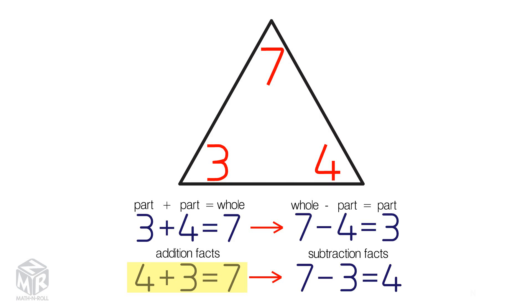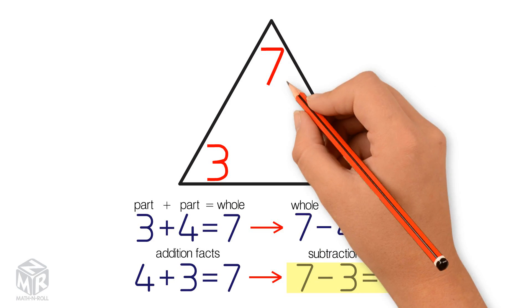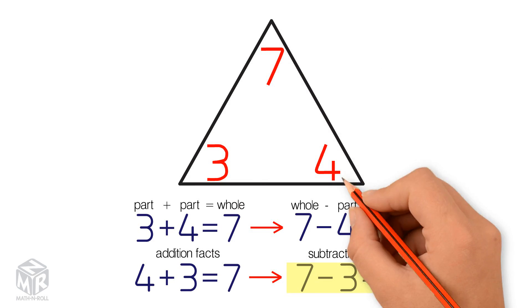For subtraction, we subtract one of the bottom numbers from the top number. 7 minus 4 equals 3. 7 minus 3 equals 4.